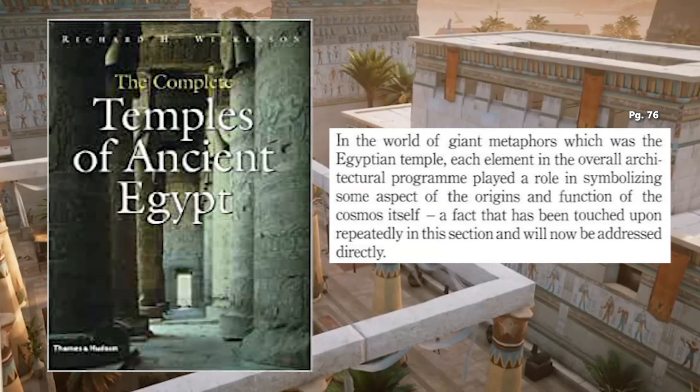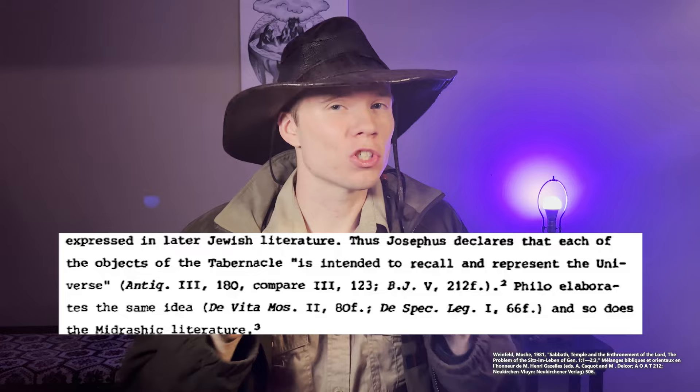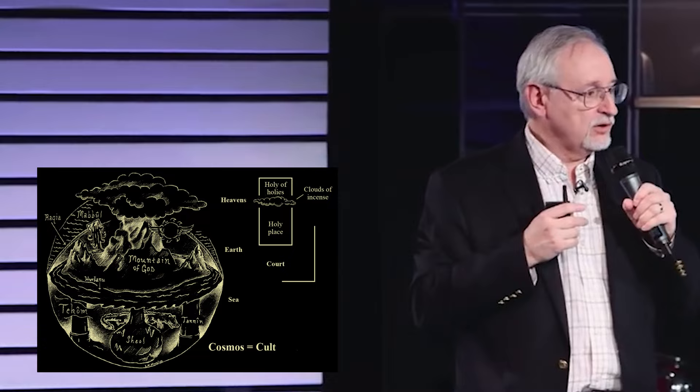One of the biggest standout features of the ancient Egyptian temple was what it represents. Dr. Richard Wilkinson notes that in the world of giant metaphors which was the Egyptian temple, each element in the overall architectural program played a role in symbolizing some aspect of the origins and function of the cosmos itself. We also see this idea directly described in the depictions of Jewish writers as well as early church writers like Philo. One of those was Josephus, who described the temple in marvelous terms. People of this time weren't as concerned with the material world like we are in the 21st century — they were primarily concerned with the real meaning behind the material. Many Old Testament scholars argue that the temple and the tabernacle for the Israelites was seen as a representation of the cosmos.